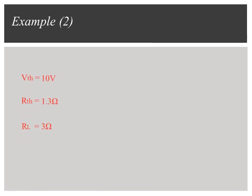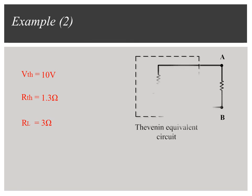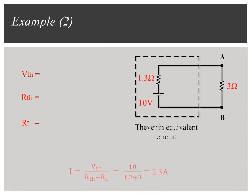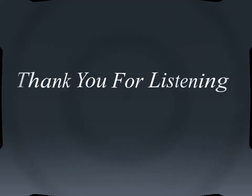Now we have V-Thevenin, R-Thevenin, and R-load. By using the Thevenin equivalent circuit, the current flowing through the load is equal to 2.3 Amperes. Thank you for listening.